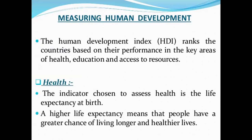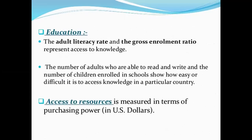One of the key components is health; another is education; another is access to resources. Health is the most important part in the current case. Access to health is measured by life expectancy — higher life expectancy means people have greater chances of living longer, healthier lives. For education, adult literacy rate and the gross enrollment ratio represent access to knowledge — the number of adults who can read and write and the number of children enrolled in school show how easy or difficult it is to access knowledge in a particular context.